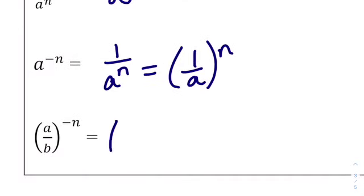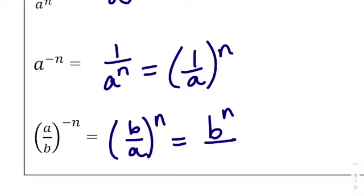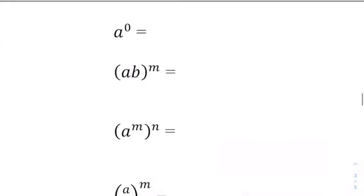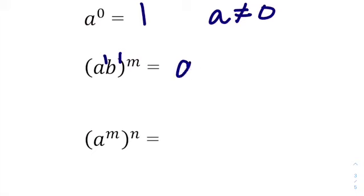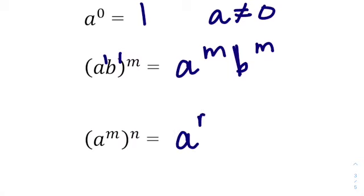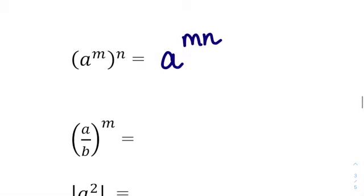If we have a ratio raised to the negative N, we can write B over A raised to the N, distributed as B to the N over A to the N. Anything raised to the zero power equals 1, but A cannot equal zero because zero to the zero is undefined — it means dividing by zero. For the power rules: A times B raised to the M equals A to the M times B to the M. Then A to the M all raised to the N — multiply those exponents to get A to the M times N.